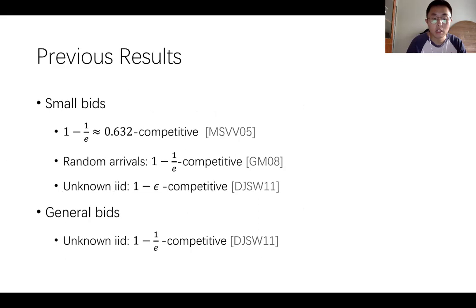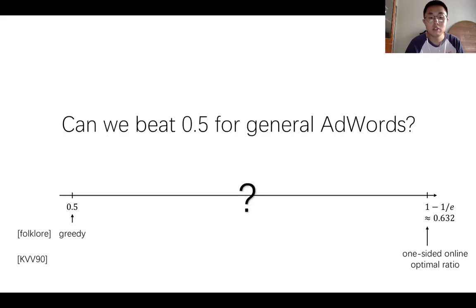An optimal 1 minus 1 over e competitive ratio is achieved for small bids. Subsequently, AdWords was studied under stochastic assumptions if impressions arrive in a random order. A 1 minus 1 over e competitive ratio can be achieved by a simple greedy algorithm, and in a more restricted known IID model, a 1 minus 1 over e competitive algorithm was introduced for small bids. For the general bids case, there is a 1 minus 1 over e competitive result for the unknown IID model. However, little is known about the most general case of AdWords, that is with general bids and without stochastic settings.